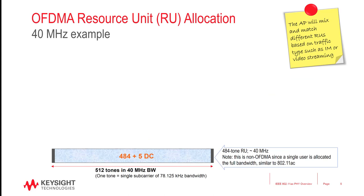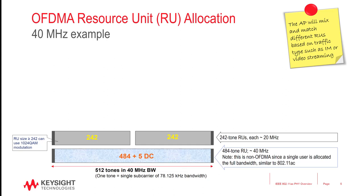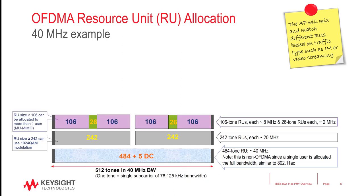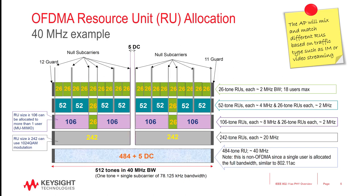Here is an example of a resource unit allocation for a 40 MHz 802.11ax channel. There are 512 available tones in a 40 MHz channel. For high-bandwidth applications such as video, the access point can decide to allocate the entire channel to a single user — the same as current Wi-Fi and not fitting the definition of OFDMA. Or, the access point may serve two users simultaneously, each occupying a 242-tone resource unit. For small packets such as IM or voice over Wi-Fi, it can also divide up the resources all the way down to 26-tone resource units, and in theory serve 18 users simultaneously. So as you can see, OFDMA enables efficient use of available spectrum, especially for low-bandwidth applications.